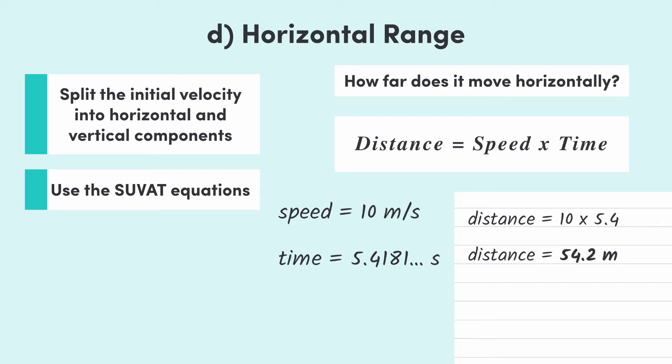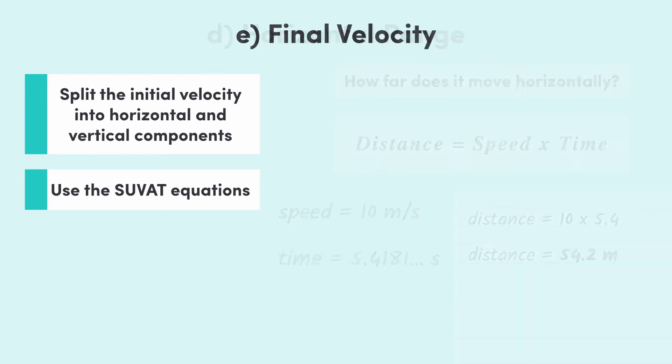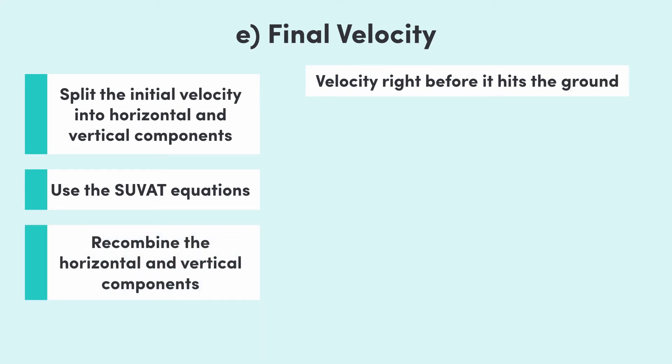Alright guys, part e here is to tie it all together and give the final velocity the instant before it hits the ground. So, for this one, we need to combine the final horizontal and vertical velocities. Since the horizontal velocity doesn't change, it stays at 10 meters per second. However, the vertical velocity isn't that nice, so we have to calculate it.